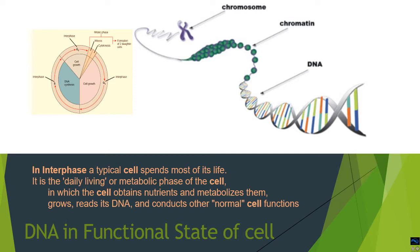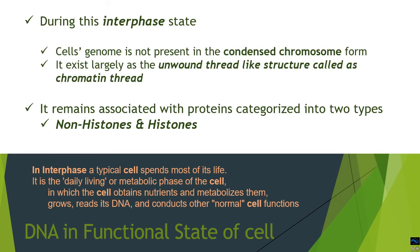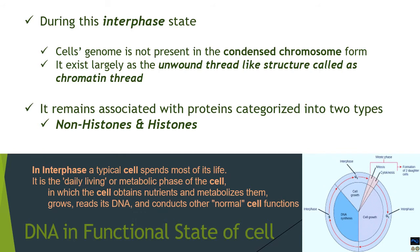This is the functional state of a cell. In the functional interphase state, DNA is not present in condensed form or as chromosomes. It is unwound and present as thread-like structures called chromatin threads. In this chromatin thread structure, the DNA associates itself with proteins of two types: non-histones and histones.